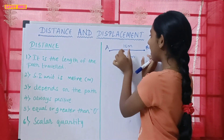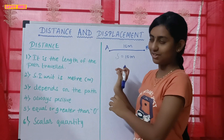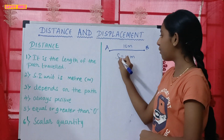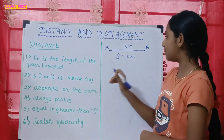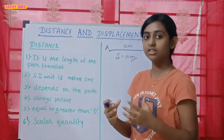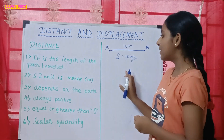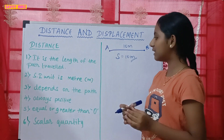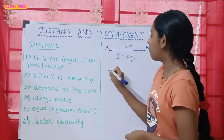Distance is denoted by a small 's' and the unit of distance is meter, which is used to measure the value of distance. Now, distance depends on the path. Let's take another example to understand why.